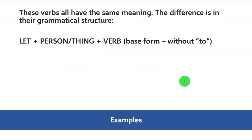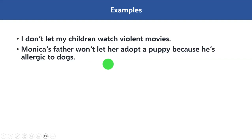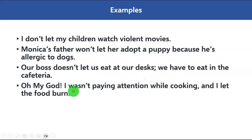Let's take a few examples. I don't let my children watch violent movies. Monika's father won't let her adopt a puppy because he's allergic to dogs. Our boss doesn't let us eat at our desks — we have to eat in the cafeteria.